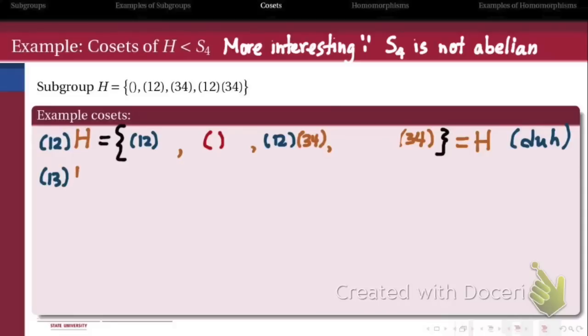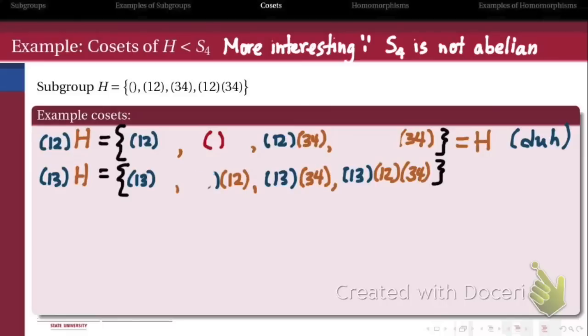Where it gets interesting is if I operate with a different element from outside of the subgroup, say (1,3). If I operate on H on the left by (1,3), and then I simplify everything I have, what I end up with is a set of three elements in S4, none of which came from the subgroup H. In fact, they come from outside of H.